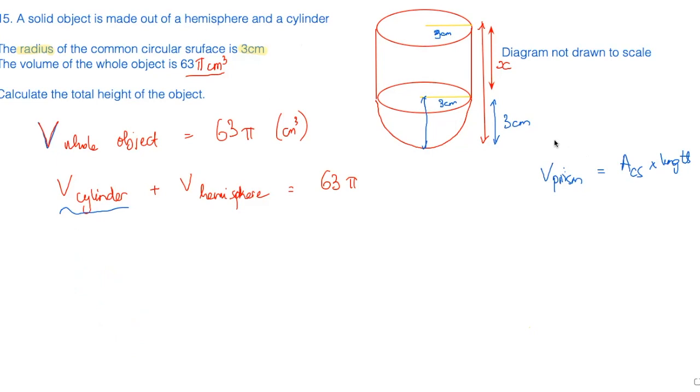The cross-section is the area of a circle, so πr² times your length here is actually the height of the cylinder, which is x. So times x. Moving on to the volume of a hemisphere, the volume of a sphere is 4/3 πr³. So a hemisphere will be half of it. So you're going to write out 1/2 times 4/3 times πr³, and that equals to 63π.